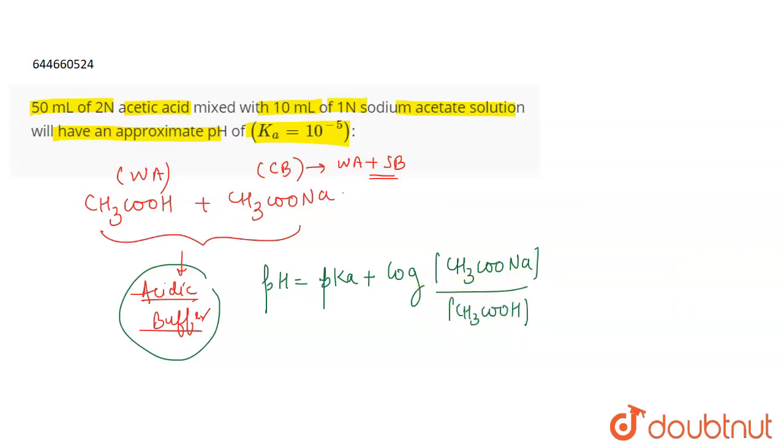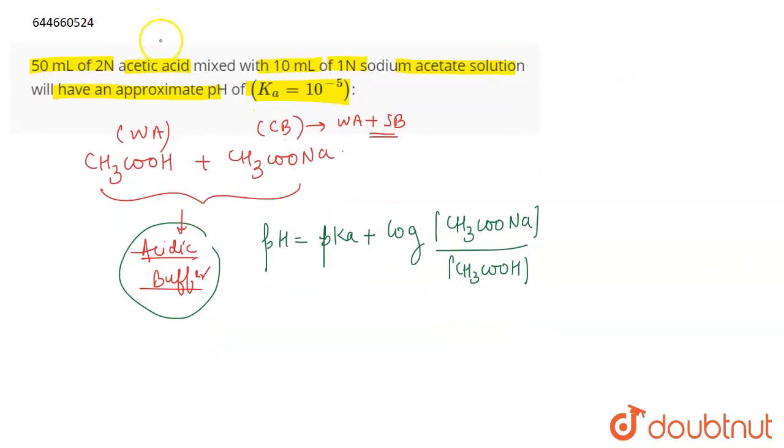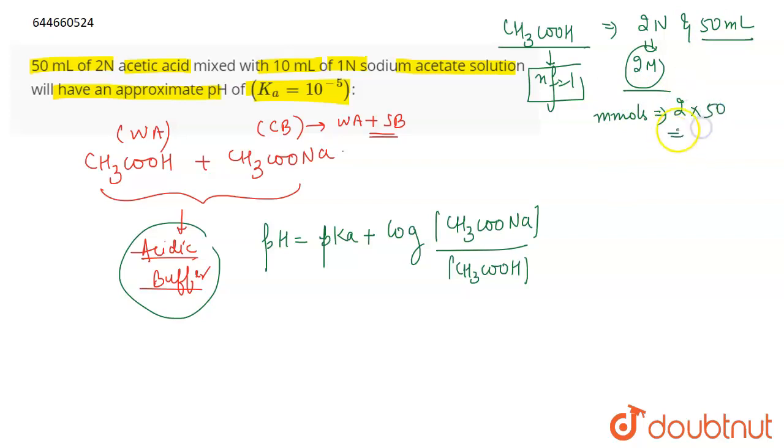Now if we talk about acetic acid which is CH3COOH, you are given 2 normal acetic acid and 50 ml volume. Now 2 normal means 2 molar only because if we talk about acetic acid its n factor is equal to 1 because it gives only one H+. So n factor is 1 which means that normality is equal to molarity. So it is 2 molar, 50 ml. So if we talk about the millimoles, what will be the millimoles? Molarity into the volume in ml. This will be 100 millimoles.